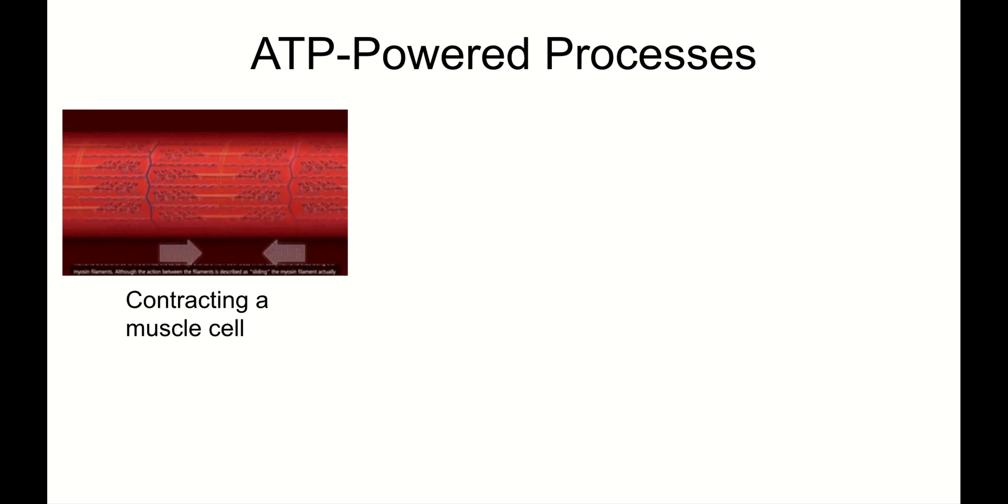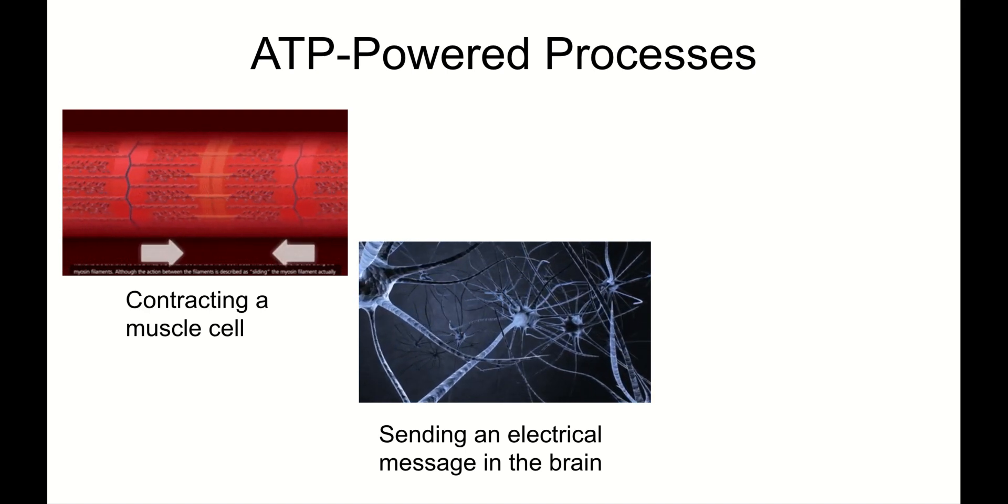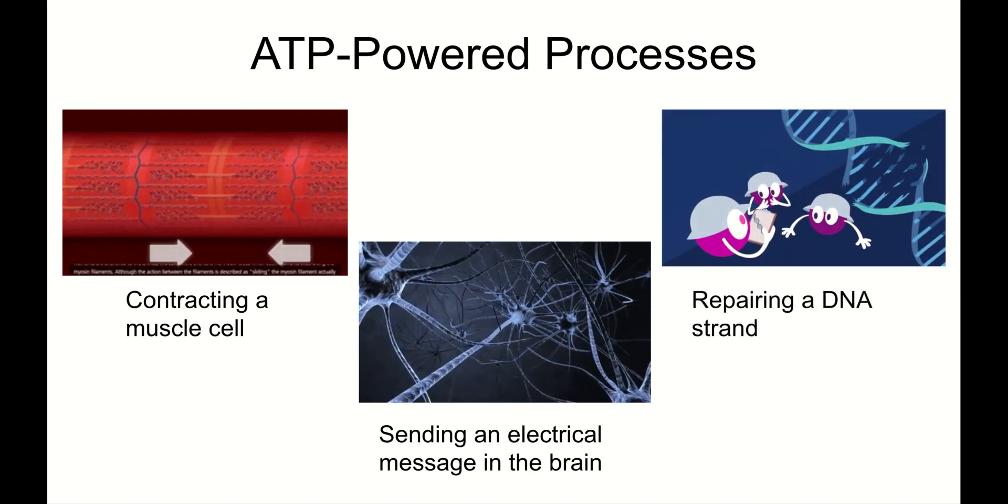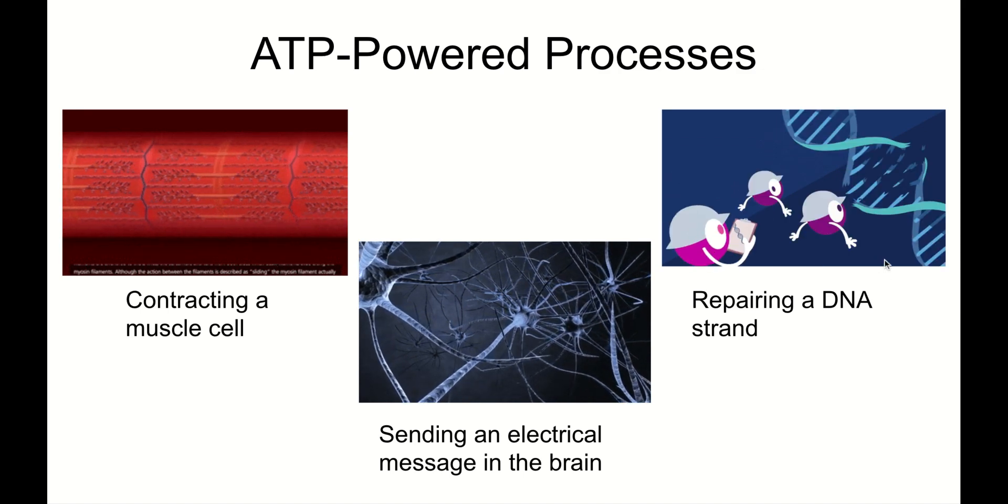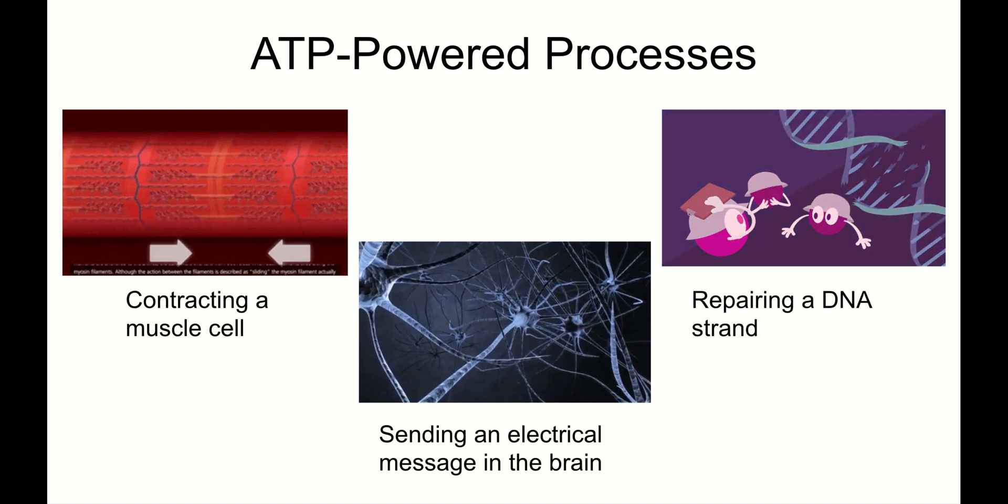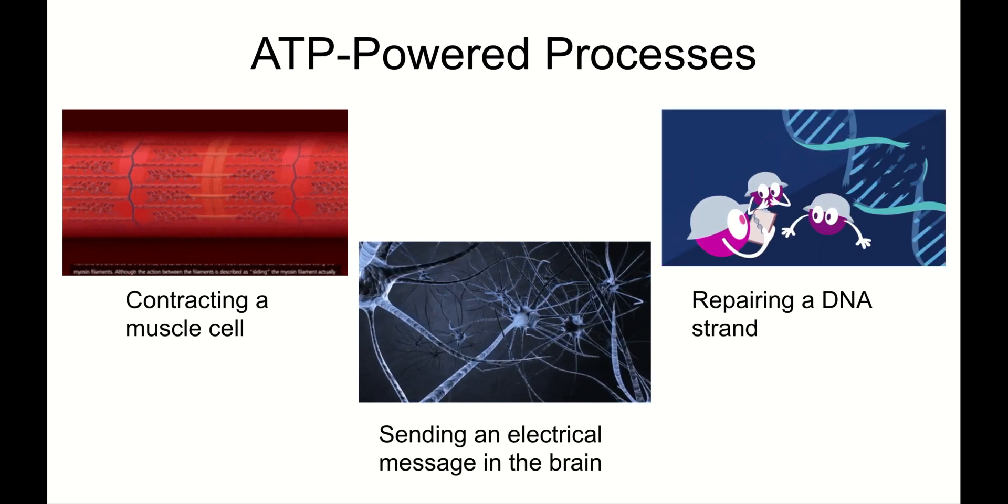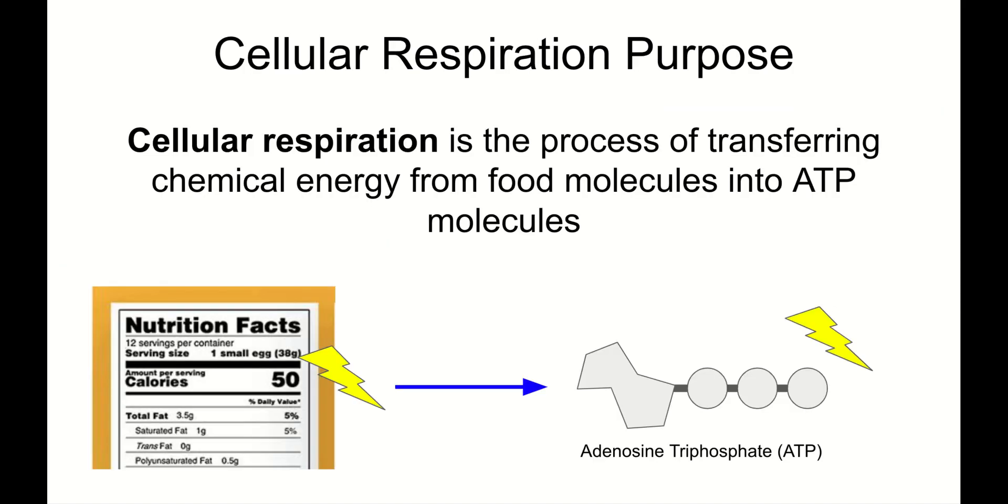Some examples of ATP-powered processes, because I said basically everything is an ATP-powered process. Contracting a muscle cell: all of your movements come down to different muscles contracting, and that contraction is fueled by ATP. Sending electrical messages through the brain: all of those electrical messages are initially triggered by ATP. What about repairing DNA? You damage your DNA all the time. If you get an x-ray, if you're out in the sun for too long and get a sunburn, you've probably damaged some DNA and your body is constantly trying to repair that, all fueled by ATP. Take a moment, write down these examples.